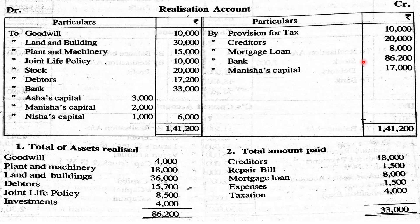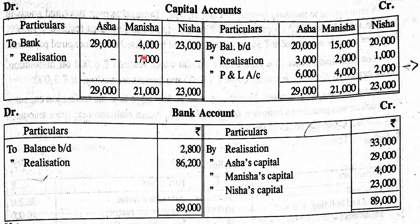The entry for Manisha taking over stock is: Manisha's capital account debit to realization account, 17,000. All capital account items are now posted. The final capital account balances are computed after incorporating realization profit, accumulated profits, and stock taken over.